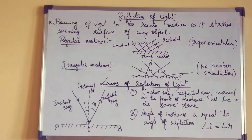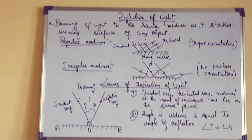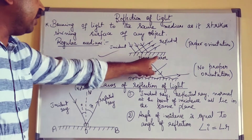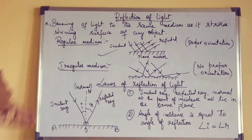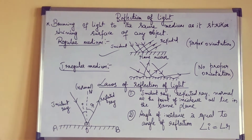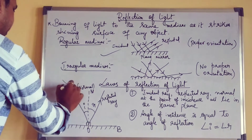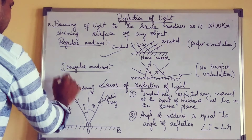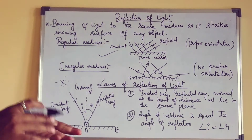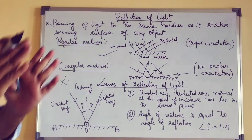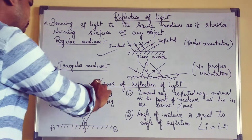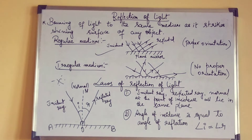So these are the two types of mediums. Mainly we will deal with the regular medium — that is, we will go with the plane mirrors and other various types of mirrors in the syllabus. Now the very important thing: for reflection to happen, it should obey certain rules, or what we can call laws — so, laws of reflection of light.